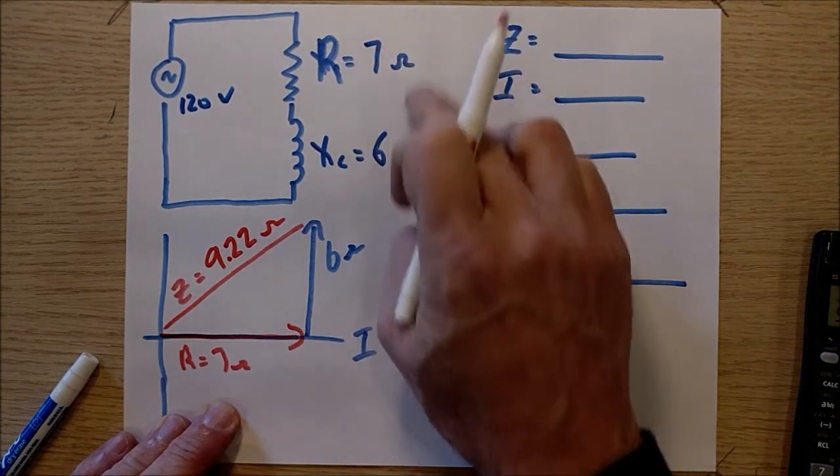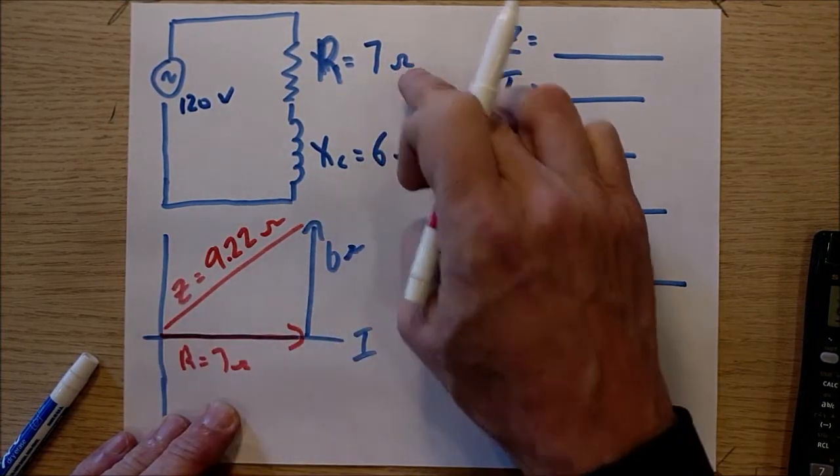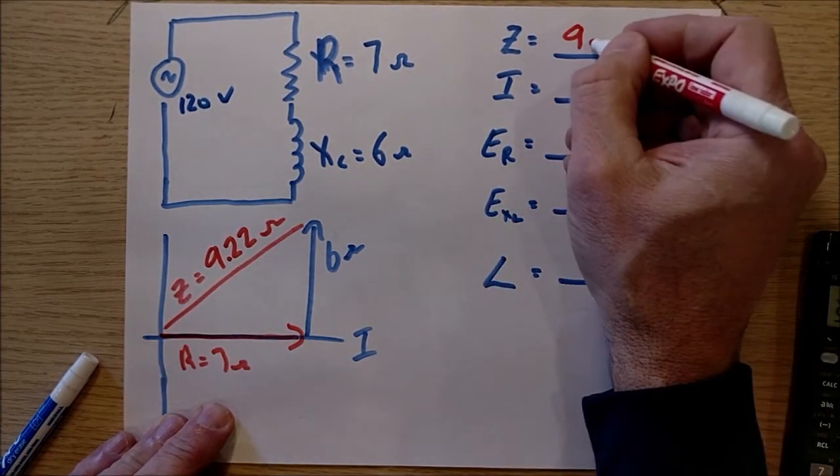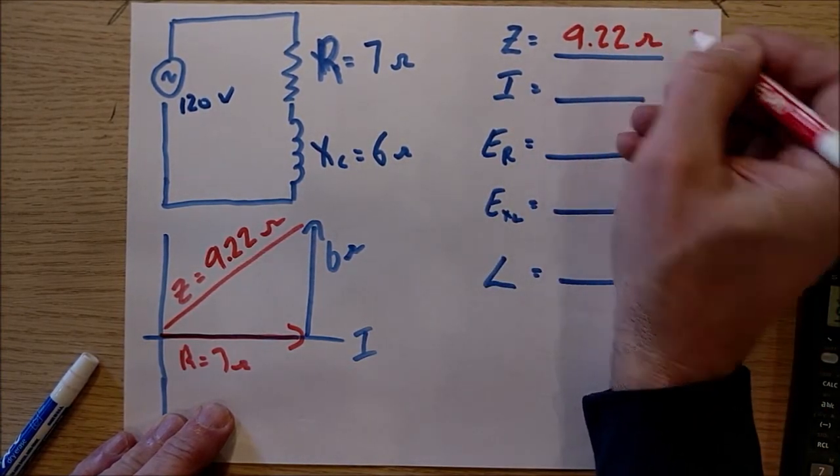You can never just add these up, guys. It's always got to be phasors. So there's my 9.22 ohms. And that goes right here.